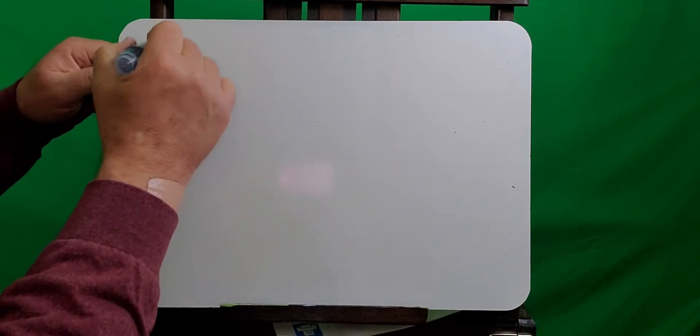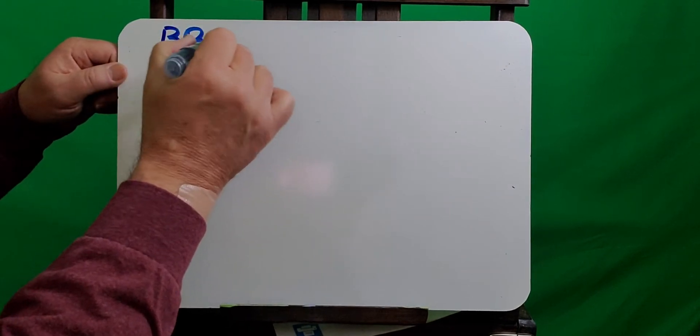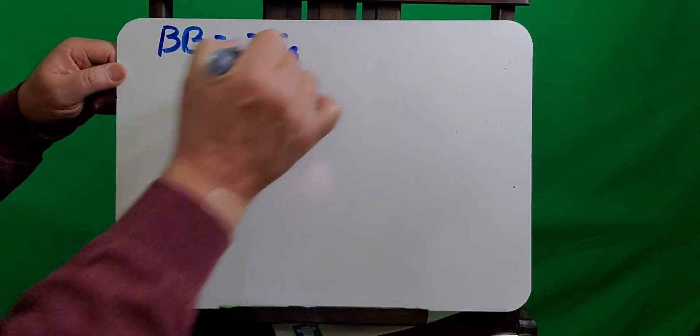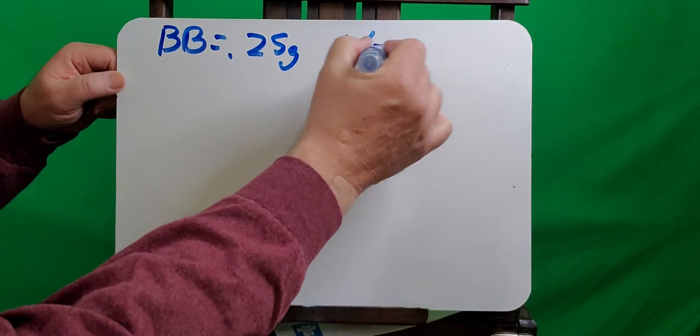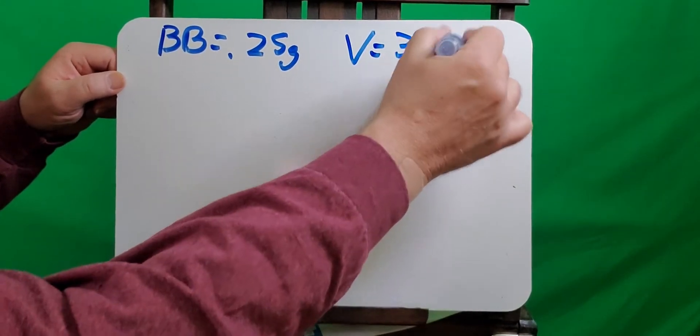Okay, so let's look at a really easy example. I want to use a BB weight of 0.25 grams and its velocity in feet per second is going to be equal to 350.